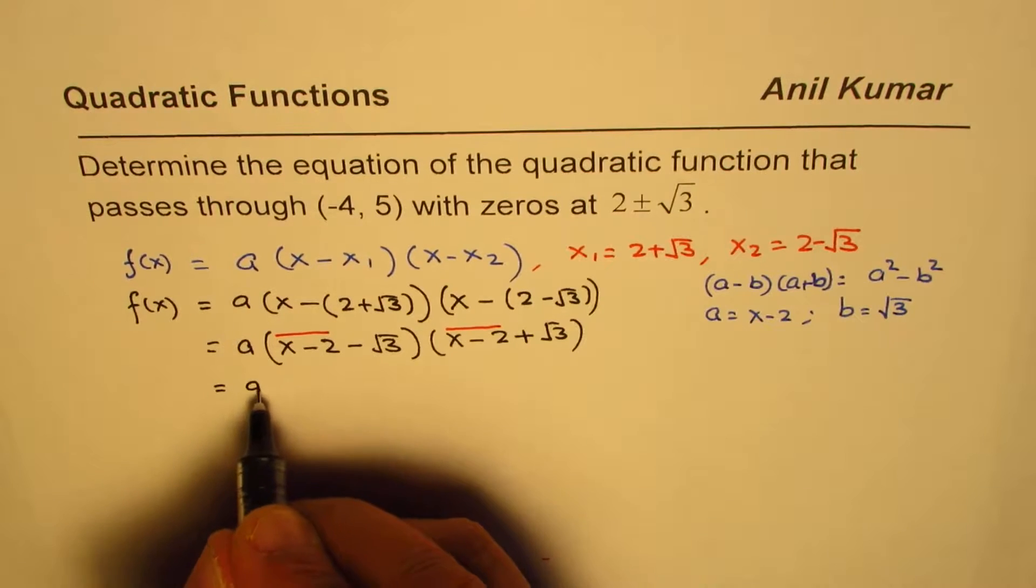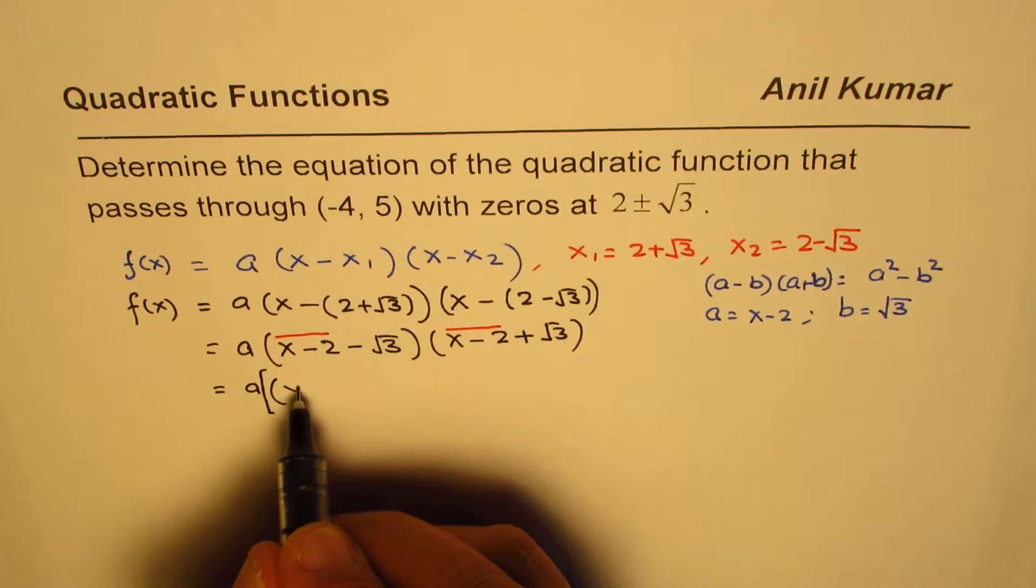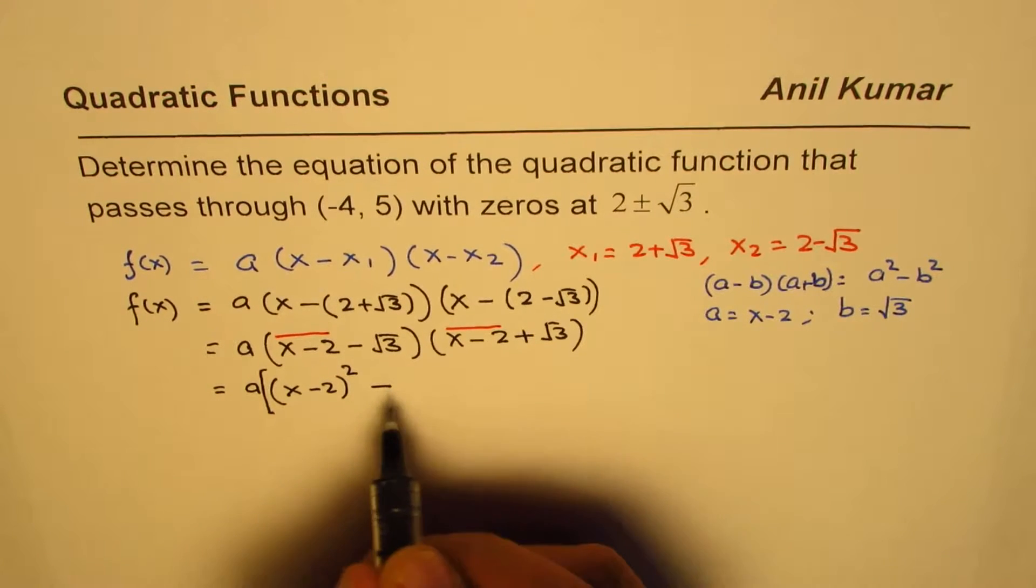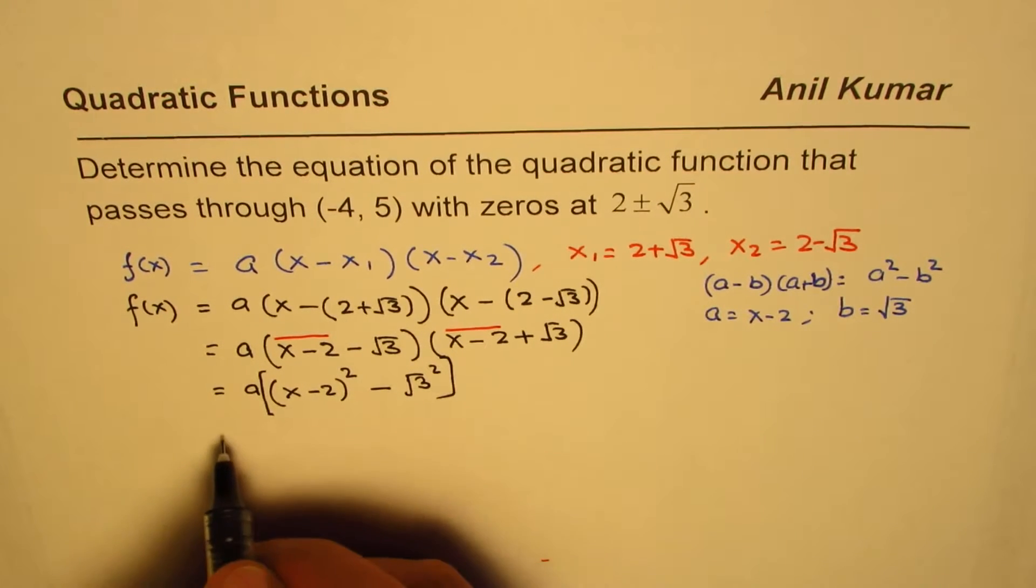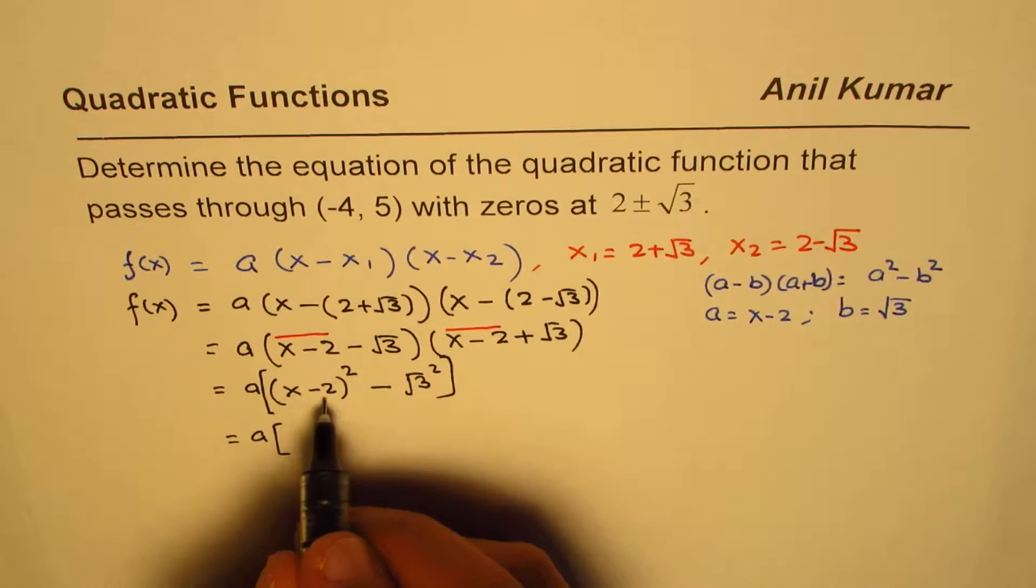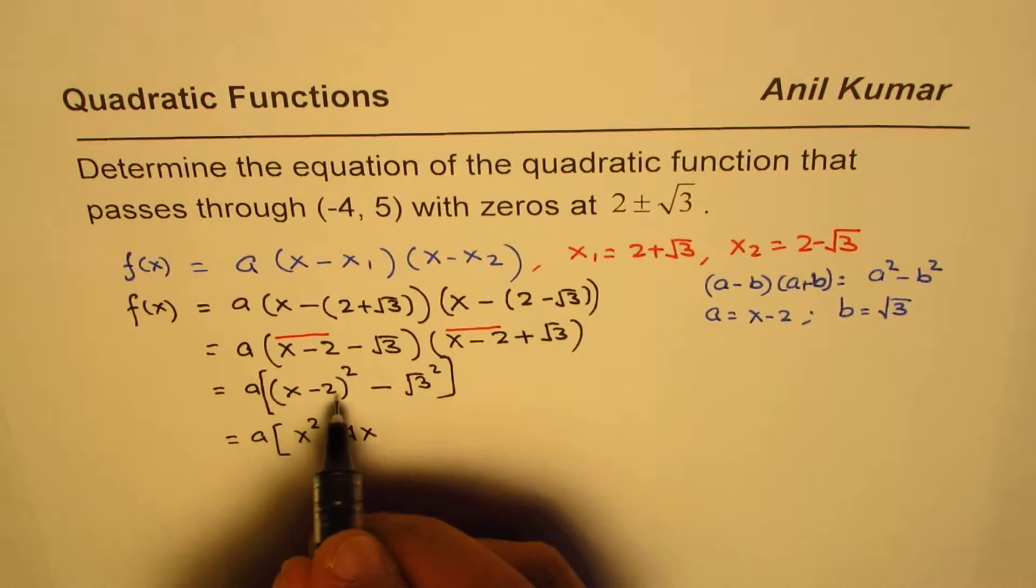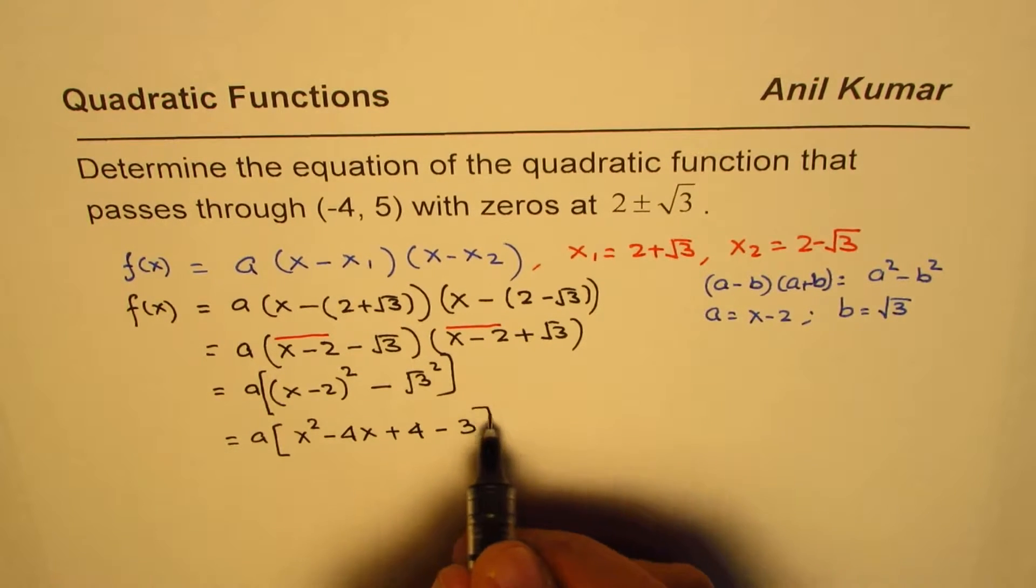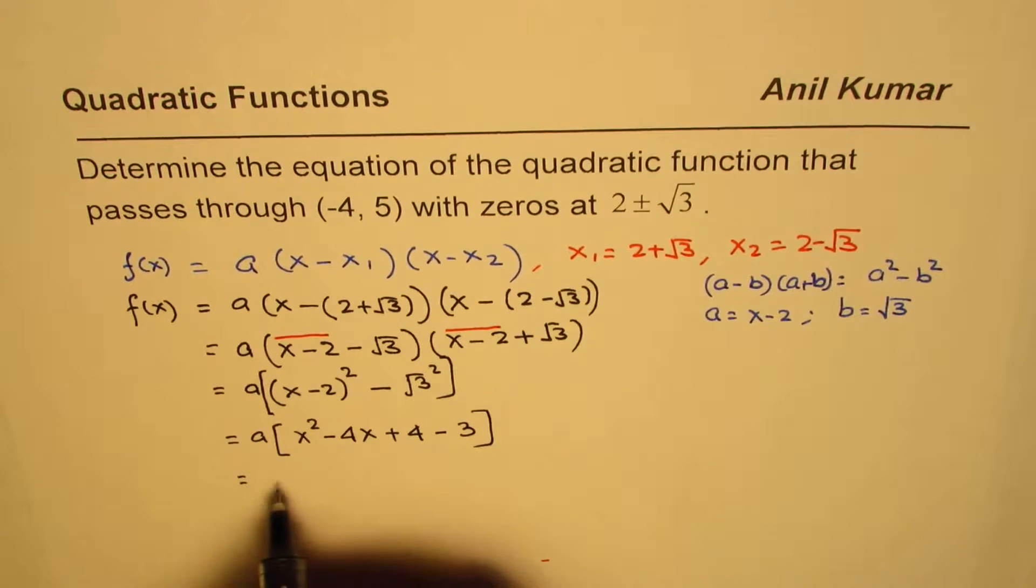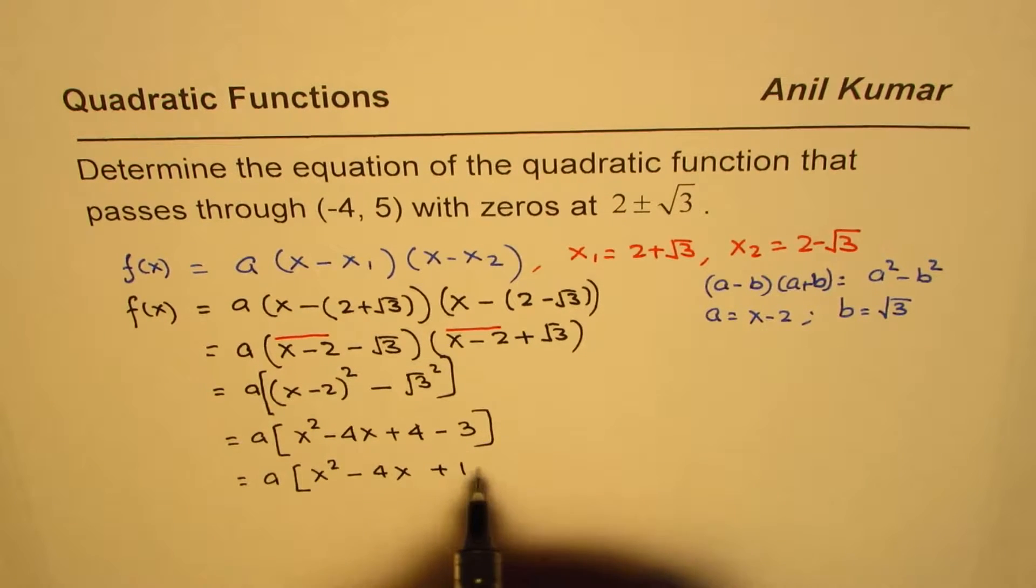So we can write this as a times [(x - 2)² - (√3)²]. Now expand: (x - 2)² is x² - 4x + 4, minus √3 squared is 3. So that's a times (combine these two terms) x² - 4x + 1. So that is the quadratic function with a.